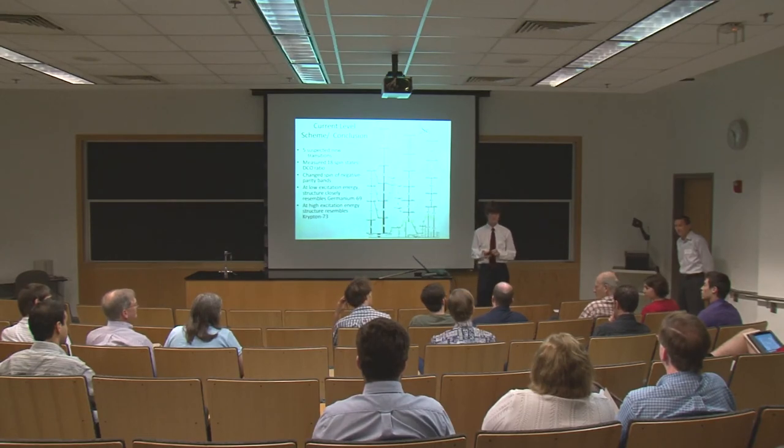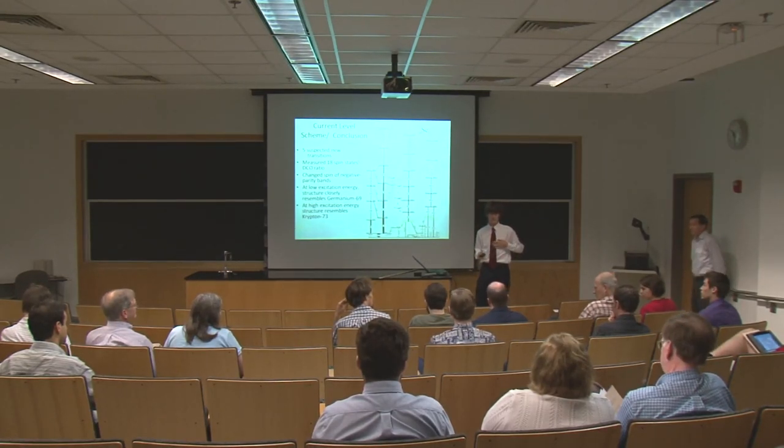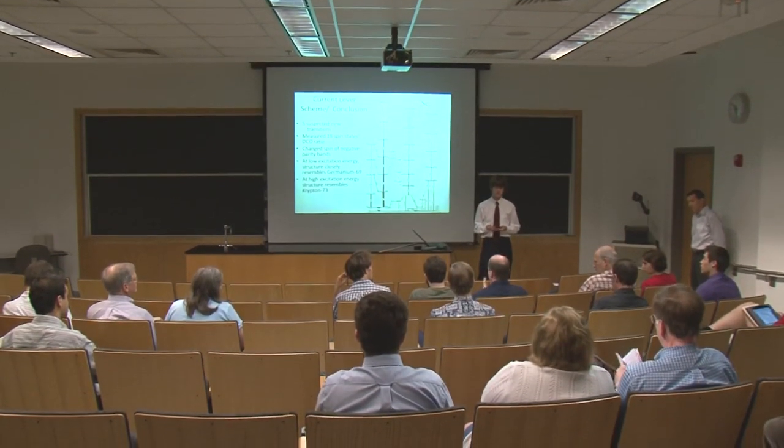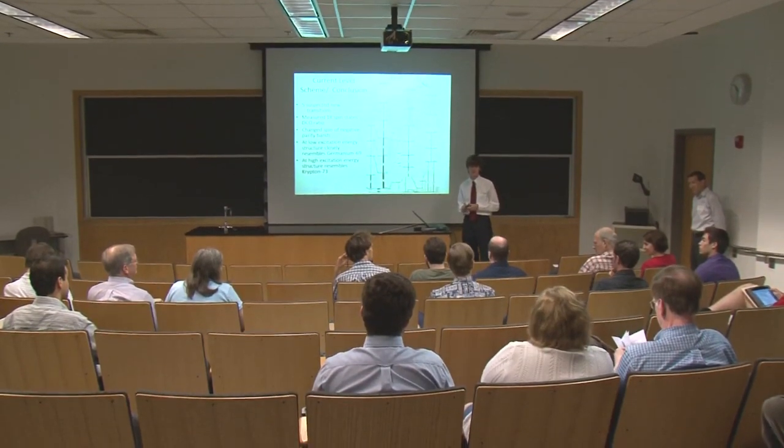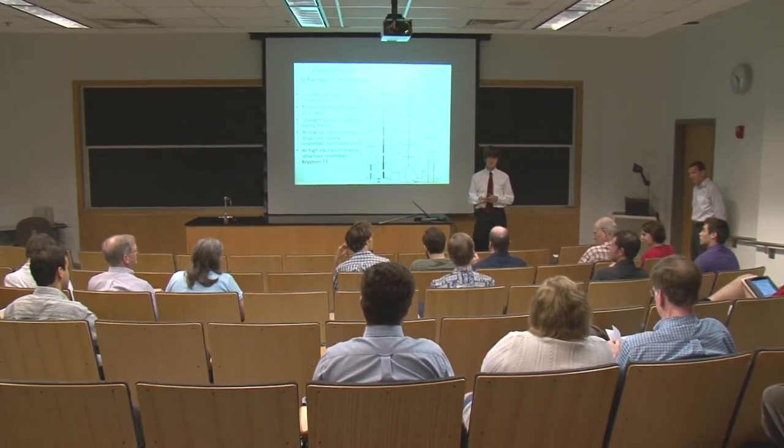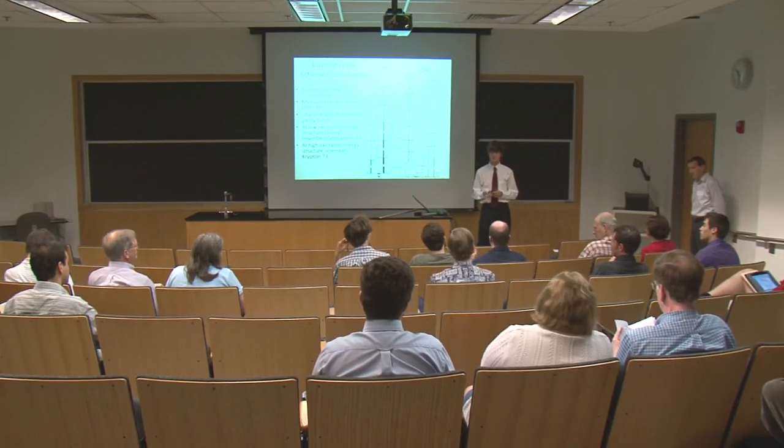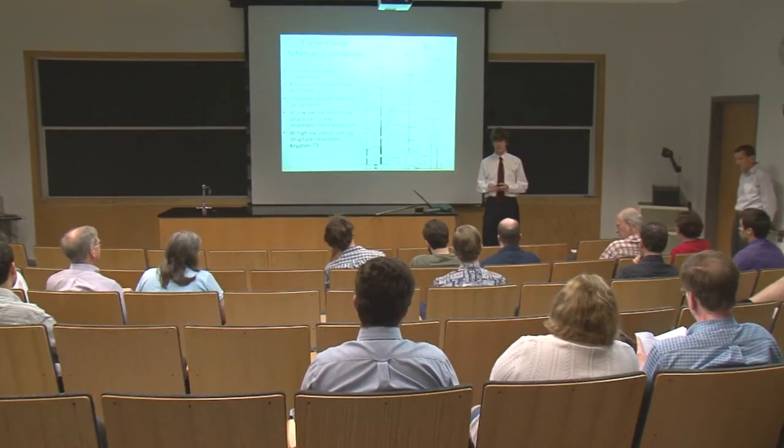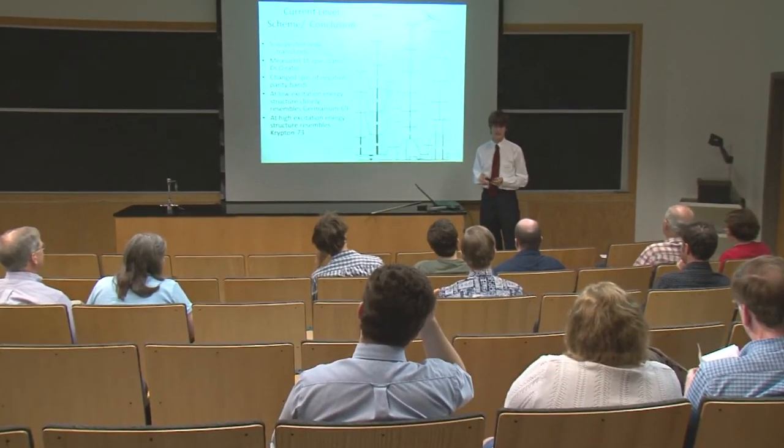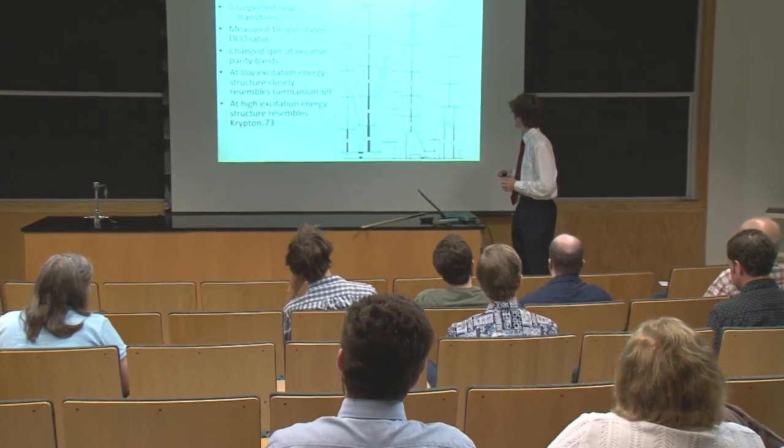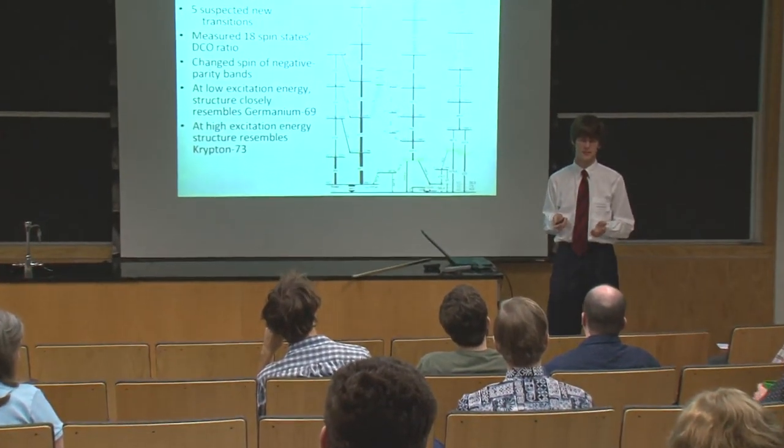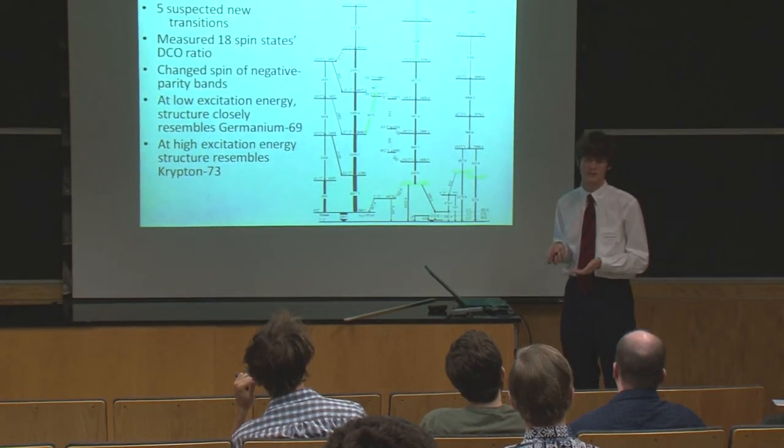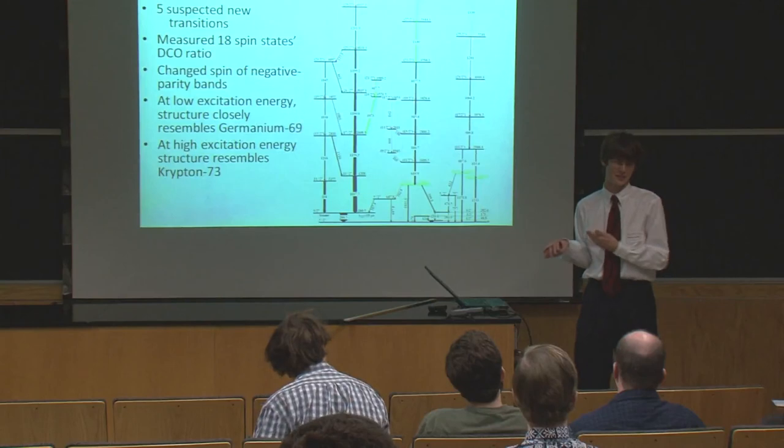You said that the new measurement fit the previous data better than the previously understood thing. How complicated would it be, and I'm a computer scientist not a physicist, to just maybe try a bunch of different measurements? Would that be a very computationally complex thing to do to see if we can find better fits than the ones that are currently there for established data sets? Well, there's really only two possibilities for each of these energy levels. So the reason they weren't assigned this before is because we didn't really have any data looking at it. But now that we do, it's clear that it should be this.